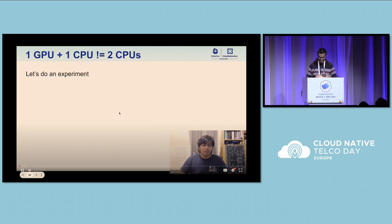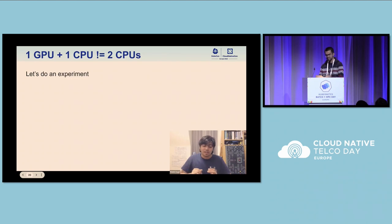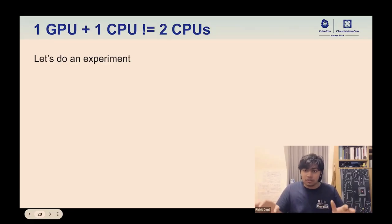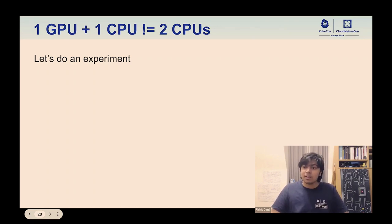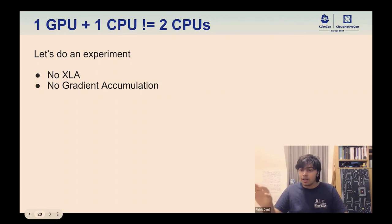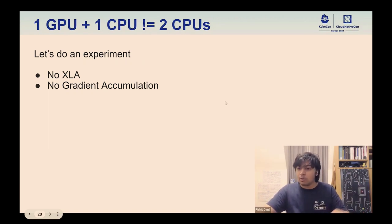I want to talk about why adding a GPU is not the same as adding a CPU — it requires fundamentally changing a lot of your code. Often this is handled by frameworks under the hood, but sometimes it still requires changing code or better scheduling jobs. What I want to show is why adding one GPU is not the same as adding one CPU in terms of how you run the code and what strategies work best. For our experiment, let's assume we have no XLA and no gradient accumulation. Let's focus on comparing one GPU plus one CPU versus two CPUs.